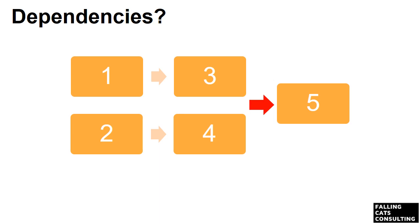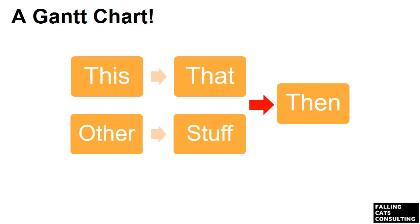Also, task 4 can't start until task 2 has finished, and task 5 can't start until both task 3 and 4 are done. By the way, we've actually created a very simple Gantt chart — a bunch of tasks making up a project. We're missing a few bits and pieces, but effectively a Gantt chart is a portrayal of a project made up of the tasks needed to complete the project.